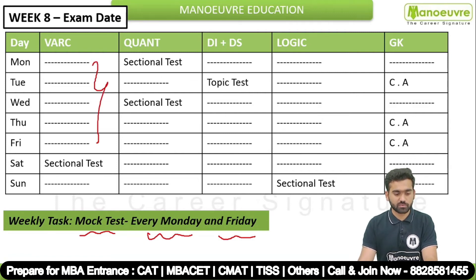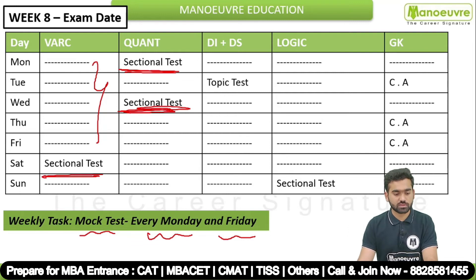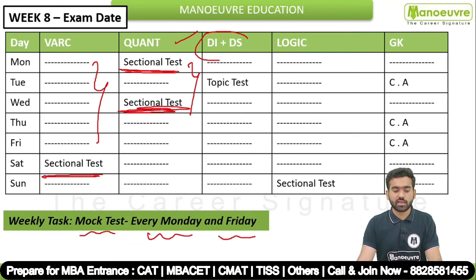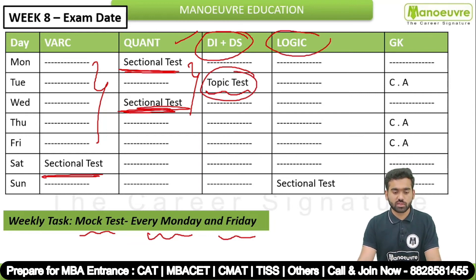For VRC, your sectional test is on Saturday. For Quant, sectional tests are on Monday and Wednesday. For DI and DS, you should give topic tests on Tuesday. For Logic, your sectional test is on Sunday. Quant is a little bit difficult as compared to other topics, so two days have been given for its sectional tests — Monday and Wednesday.